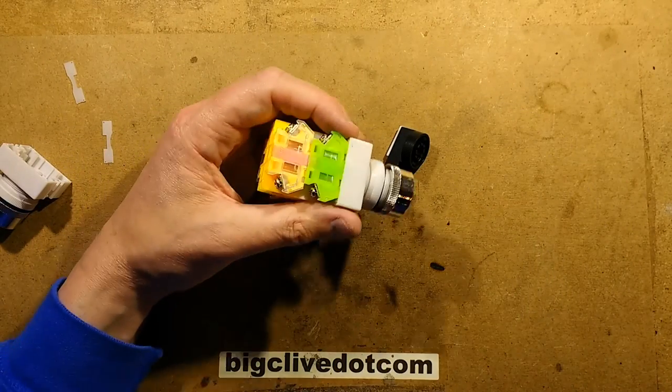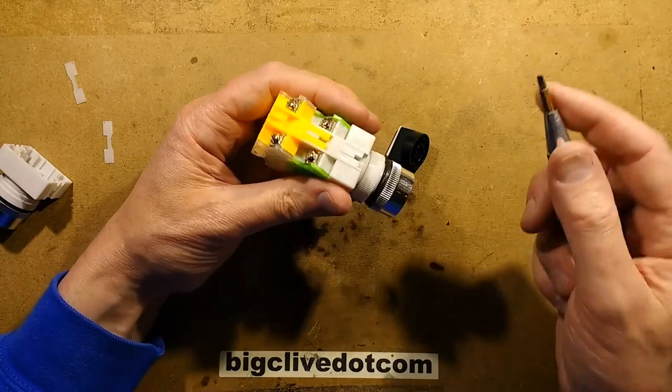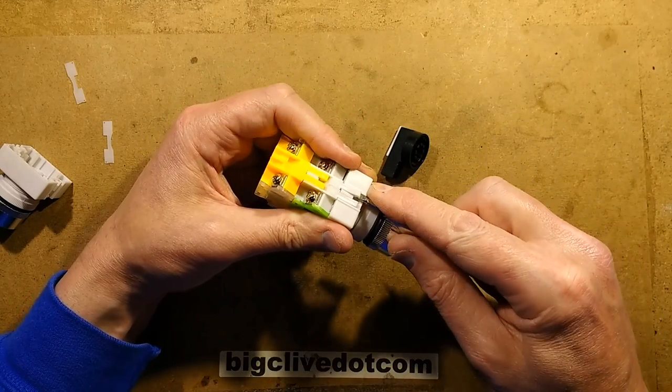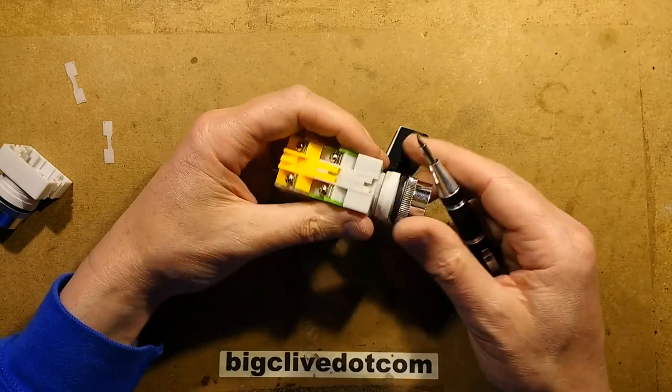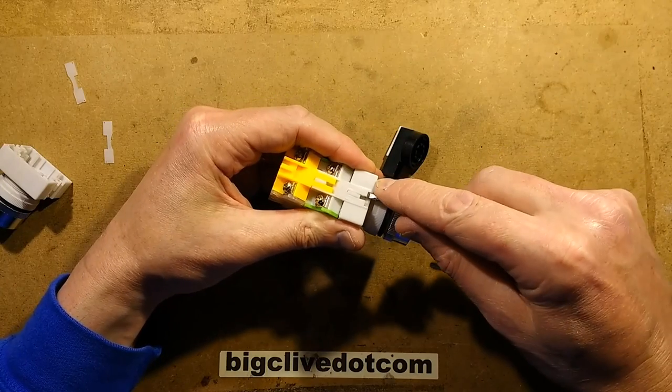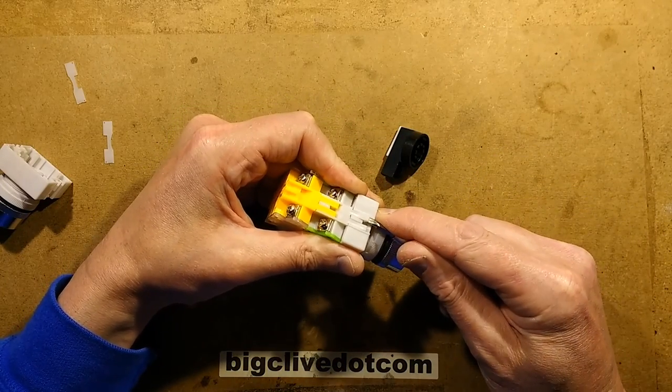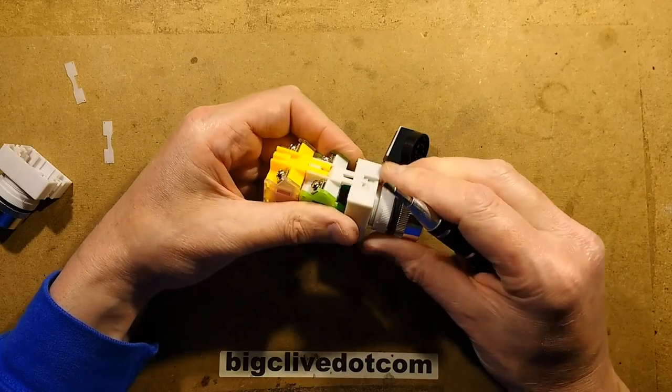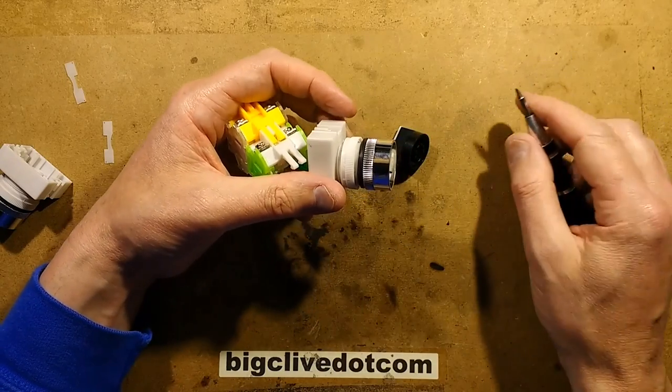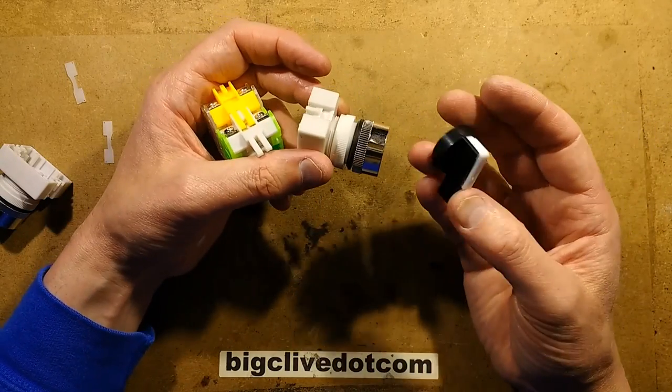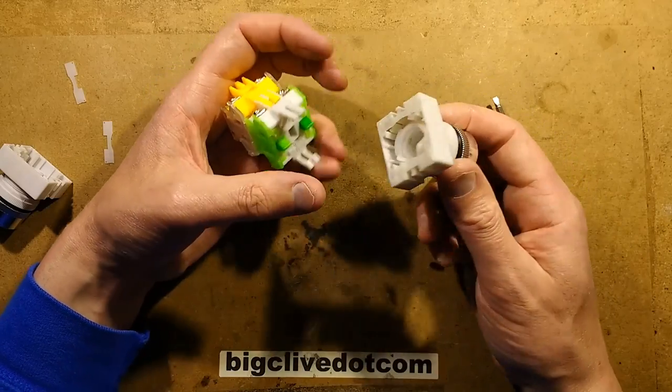So the contact blocks are held on by these sort of clips here, and to be honest the easiest, cheapest way to get one of these contact blocks is just to buy another switch. If you wanted one switch with two contact block sets, just buy two switches at the same time and that leaves you a complete switch and bezel mechanism as well.